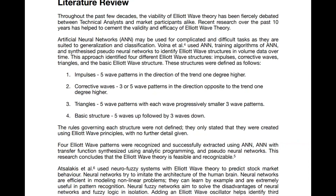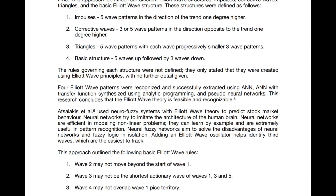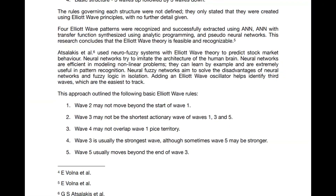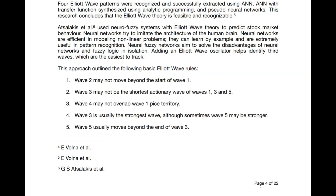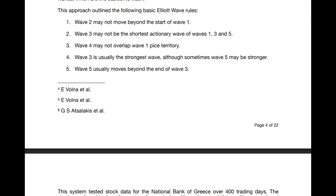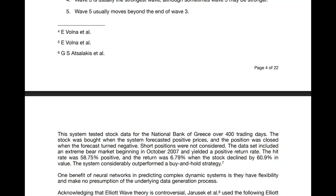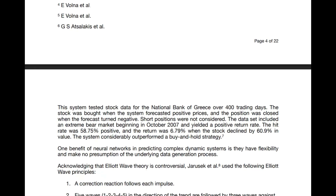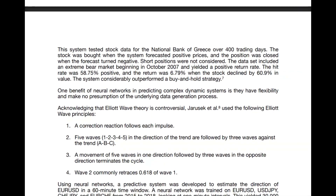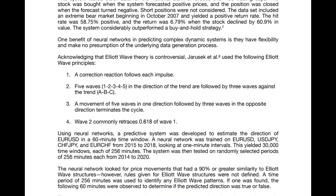This isn't the first time that Elliott Wave Theory has been studied in a quantitative capacity. We've highlighted three other research papers. The first by Volna et al used artificial neural networks to recognize Elliott Wave patterns of motive and corrective structures, finding it feasible and recognizable. Itzalikis et al used NeuroFuzzy Systems — a neural network designed to imitate the human brain — giving it Elliott Wave rules and testing stock data for the National Bank of Greece over 400 trading days. Their system only took long positions, and while stocks declined 60.9%, their return was 6.79% with a hit rate of 58.75%, showing the benefit of Elliott Wave patterns.